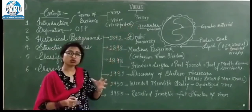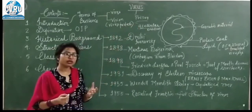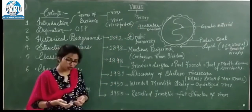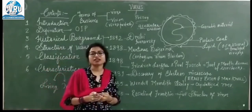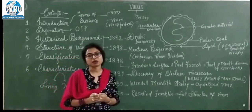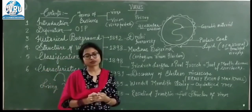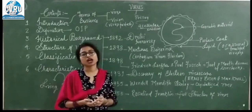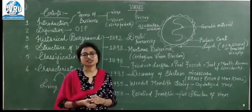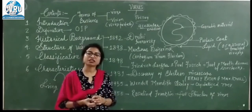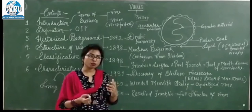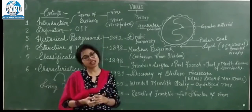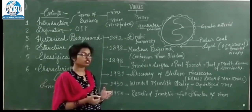Cell क्या होती है? We know that a cell consists of the living matter protoplasm and the nucleus. लेकिन viruses A-cellular होते हैं, मतलब वो particulate form में exist करते हैं.